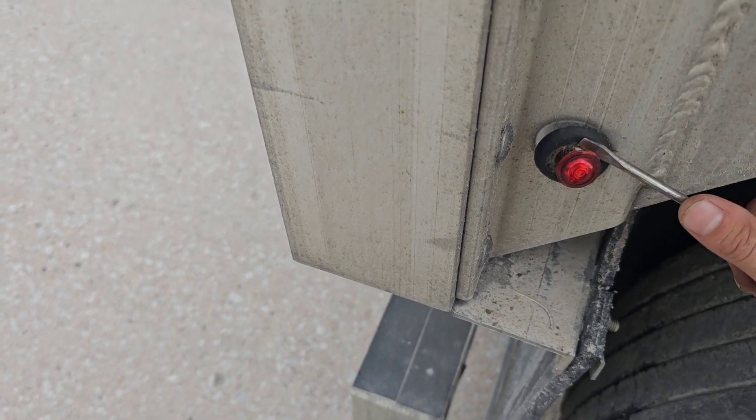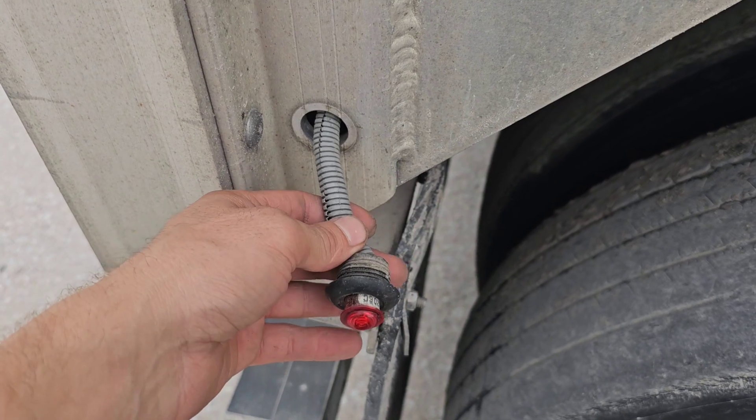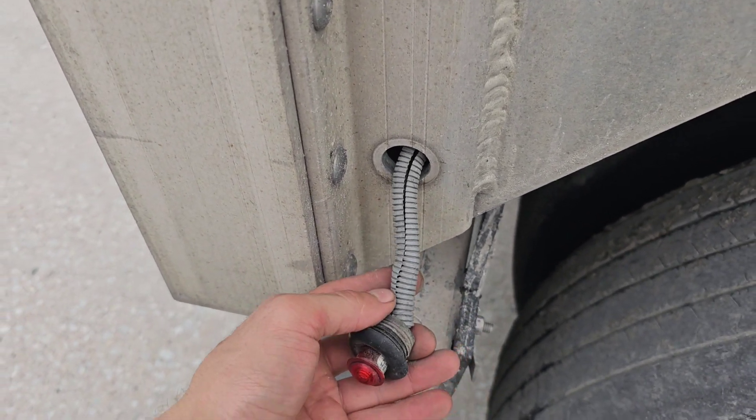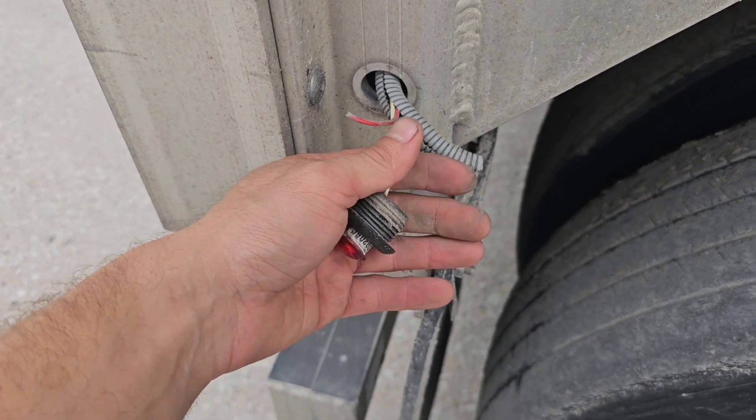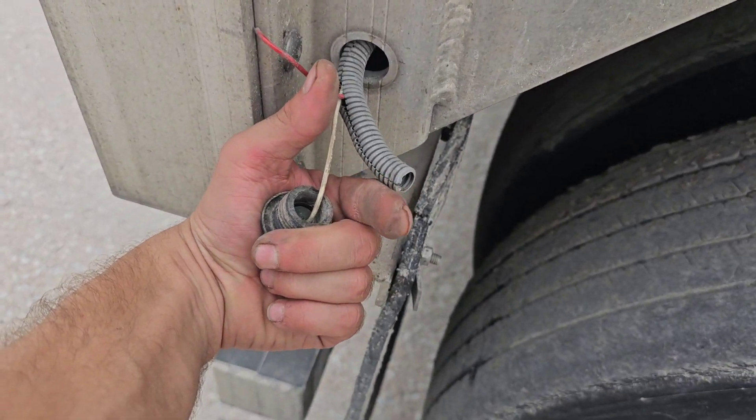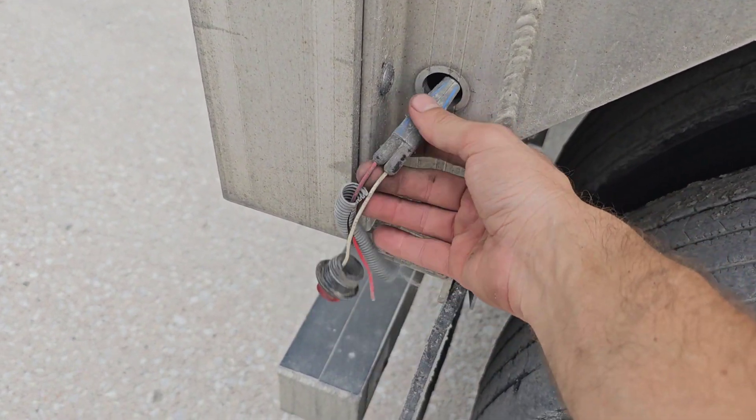Most of the time it's not just a matter of changing the light - most of the time the wire's broken. So you just peel back this loom here, and you can see, yep, this wire is broken right at the light. You trace it back here and you've got a little plug.